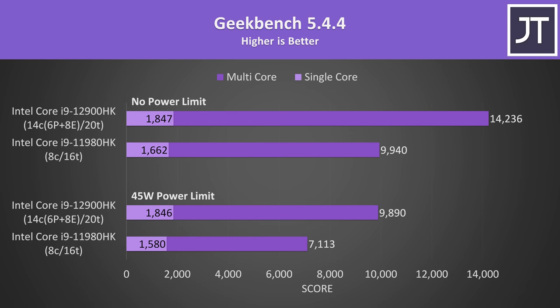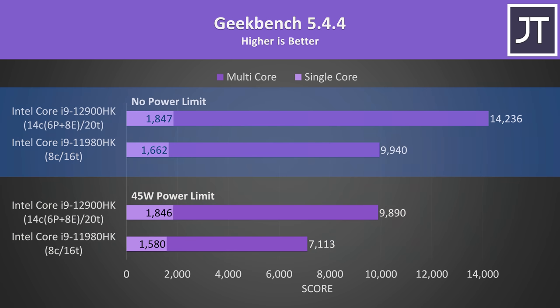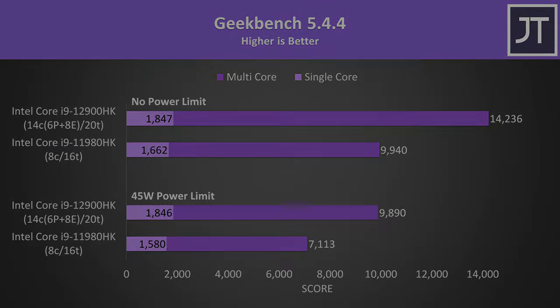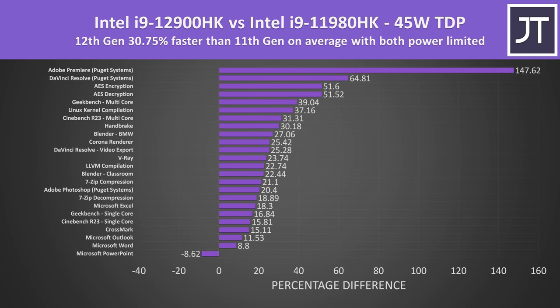Geekbench also tests out a bunch of different workloads and aggregates them into one overall score. The single core score was 18% higher with 12th gen, while the multicore score difference was larger with a 43% higher score — makes sense given the core and thread count difference at play here. On average out of all of these applications tested, Intel's new Core i9-12900HK CPU was about 31% faster when compared to their older Core i9-11980HK from last generation with both power limited to a 45 watt TDP. It's only applicable to this specific list of tests as it contains a random assortment of both single and multithreaded tests.